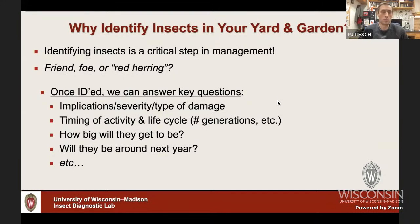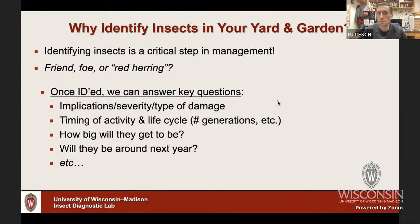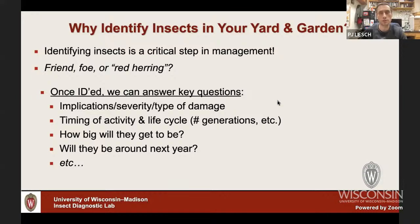One of the first questions you may be asking is: why identify the insects in your yard or garden? It's an important step in the management process. If we don't know what the insect is, it's hard to tell what its presence really means. We may find an insect on a plant and not know — is it friend or foe? In plenty of cases, it may just be a red herring, something incidental that won't cause any damage or very minor damage. We need to identify it to understand the implications.